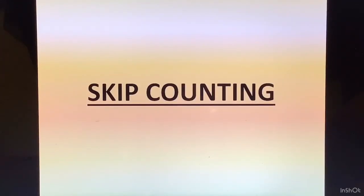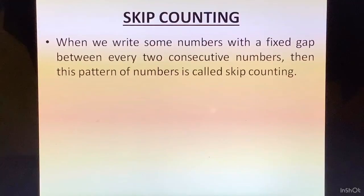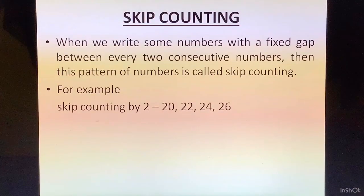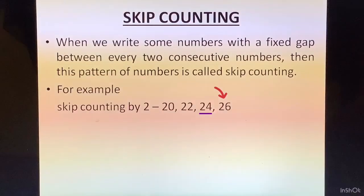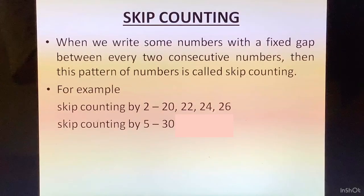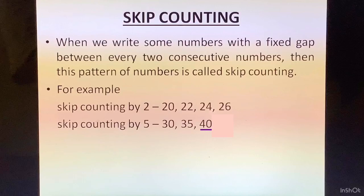Skip Counting: When we write numbers with a fixed gap between every two consecutive numbers, this pattern is called skip counting. Skip counting by 2: starting from 20, we add 2 to get 22, then 24, then 26. Skip counting by 5: starting from 30, we add 5 to get 35, then 40, then 45.